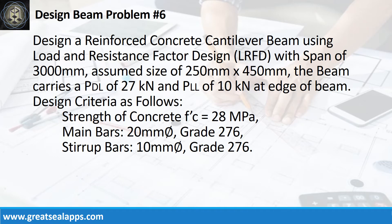Design a reinforced concrete cantilever beam using load and resistance factor design with span of 3000 mm. Assume size of 250 mm by 450 mm. The beam carries a concentrated dead load of 27 kN and concentrated live load of 10 kN at edge of beam. Design criteria: strength of concrete 28 MPa, main bars 20 mm bar grade 276, stirrup bars 10 mm bar grade 276.